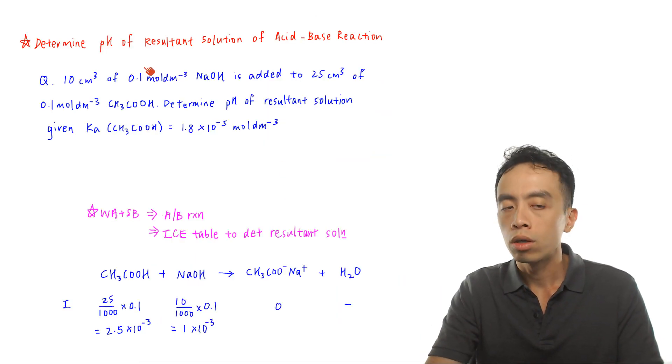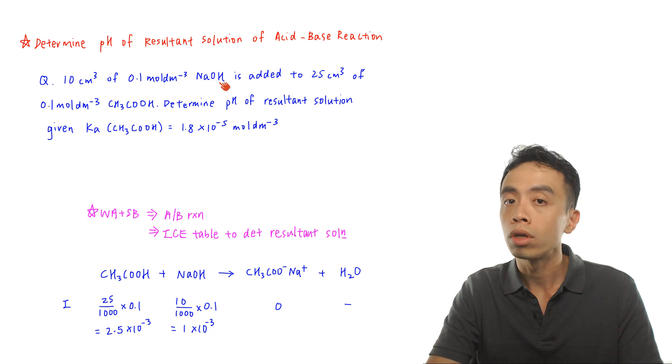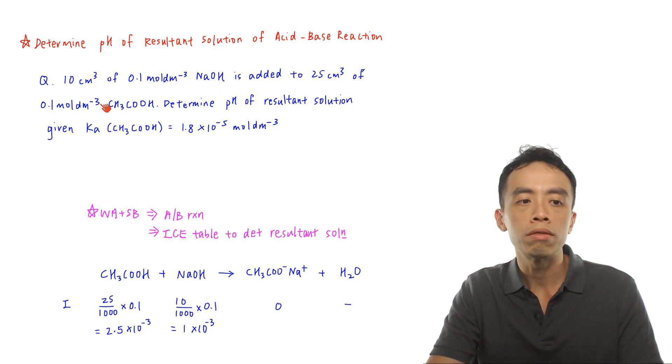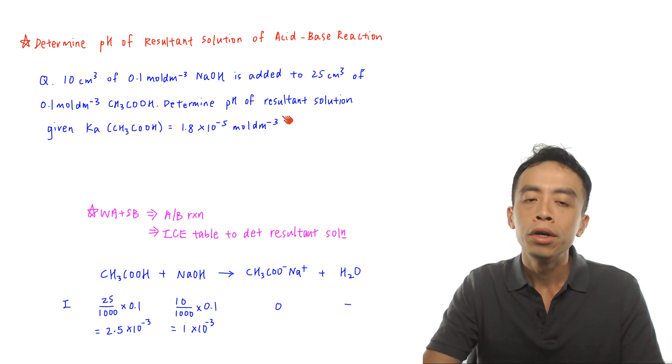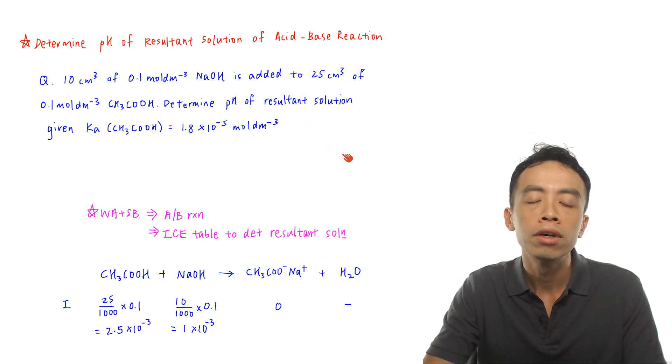In ionic equilibria, sometimes we encounter a weak acid-strong base reaction where the question requires us to determine the pH of the resultant solution. The exercise is: 10 cm³ of 0.1 mol/dm³ sodium hydroxide is added to 25 cm³ of 0.1 mol/dm³ CH₃COOH, which is a weak acid. Determine the pH given Ka of CH₃COOH = 1.8 × 10⁻⁵ mol/dm³.